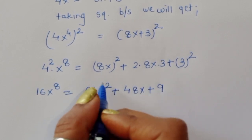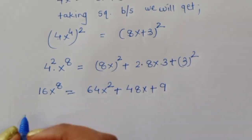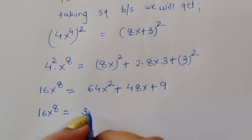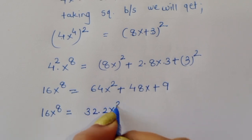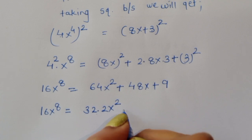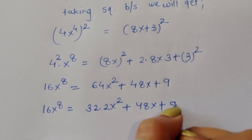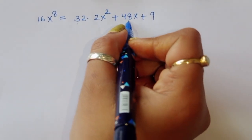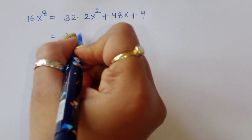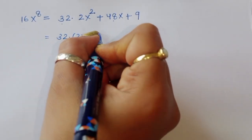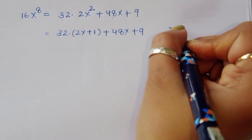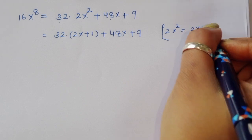We convert 64x squared into a factor involving 2x squared, since we know its value. So 64x squared equals 32 times 2x squared. From equation 2, 2x squared equals 2x plus 1, so we substitute this.